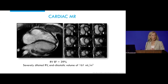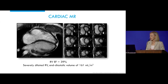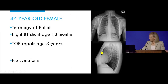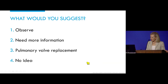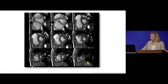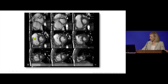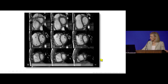We need a bit more information to determine what to do, so she went on to have an MRI. The right ventricle was markedly enlarged — end-diastolic volume indexed to body surface area was 161. The absence of the retrosternal airspace is consistent with really marked right heart enlargement. Here you can see the sternum and the right ventricle — it's really very large in this patient who is asymptomatic.